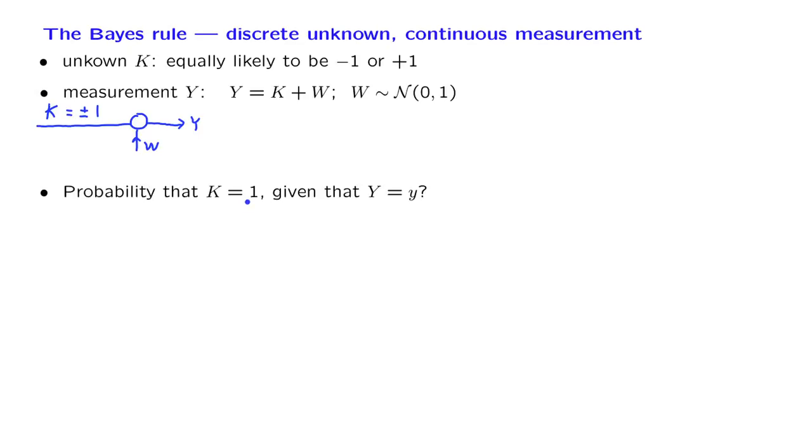Well, we use the version of the Bayes rule that we have already developed, and which is this formula that gives us the conditional probabilities that we want. And in particular here, we're asking a question about the conditional probability that K takes the value of 1, given that the value of Y has been observed. This is what we want to calculate.